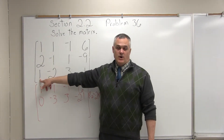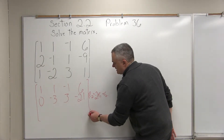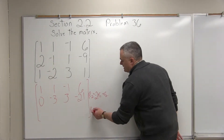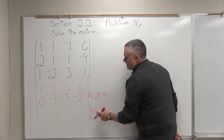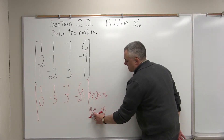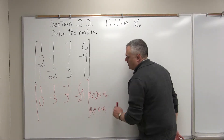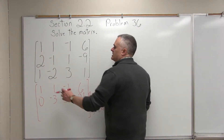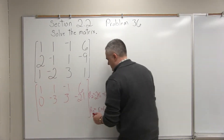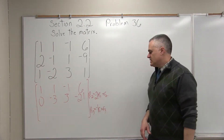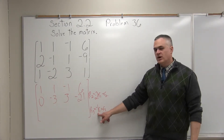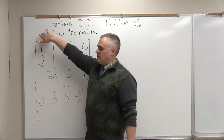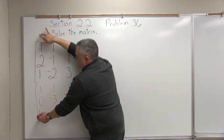Now I'll go down to the next row. In the first column I have a 1 that has to become a 0 — that's in row 3. So I have an equation that begins in row 3: row 3 equals some stuff plus the old row 3. The stuff is the row with the 1, which is row 1. It must be multiplied times the number I'm zeroing, but opposite sign — I'm zeroing a positive 1, so my equation has a negative 1. New row 3 equals negative 1 times row 1 plus the old row 3.